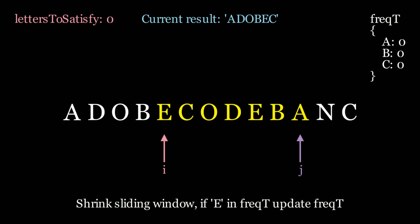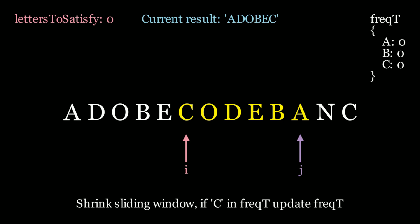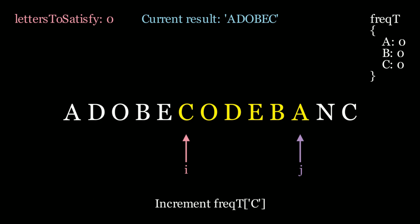Let's continue shrinking the window. We don't have an e in the hash map, so we can take it for free and slide the window. Now we ask: is letters to satisfy still equal to 0? It is, so my current substring is a result. We shrink the window again. c is in my hash map, so I increment the frequency of c as I give it up and move i — it goes to 1. Since we changed the number from 0 to positive, we need to increment letters to satisfy because I gave up a c and I'm no longer valid. Letters to satisfy goes from 0 to 1.